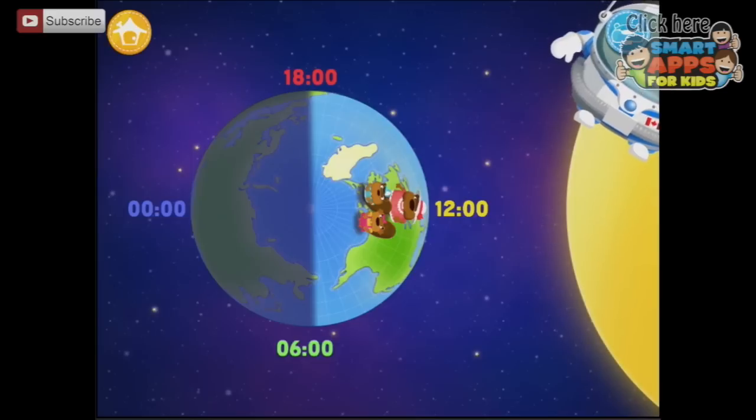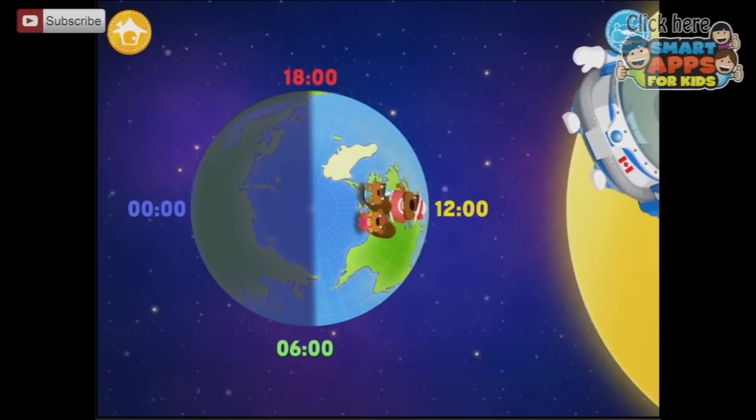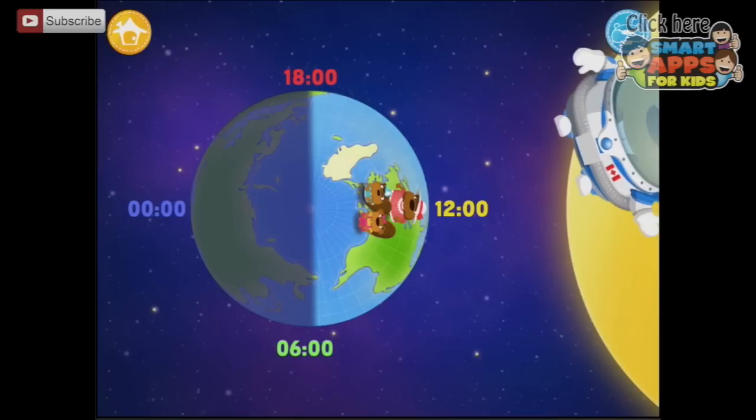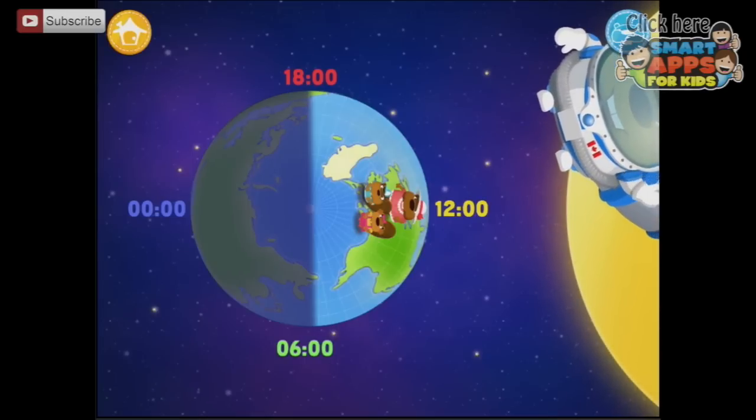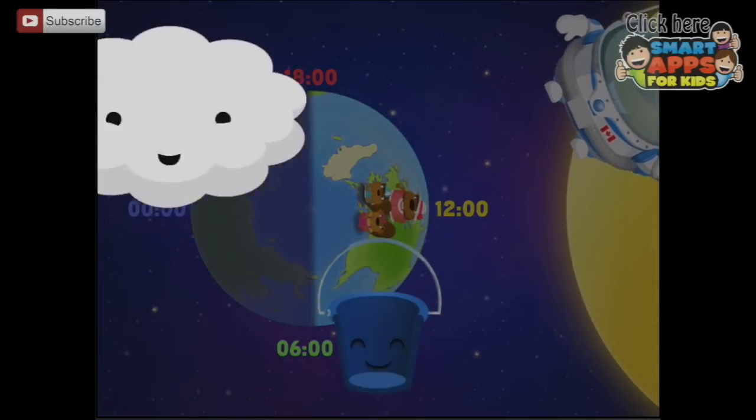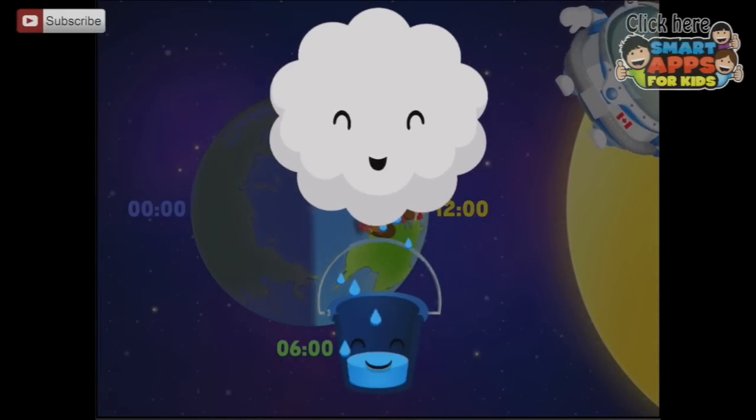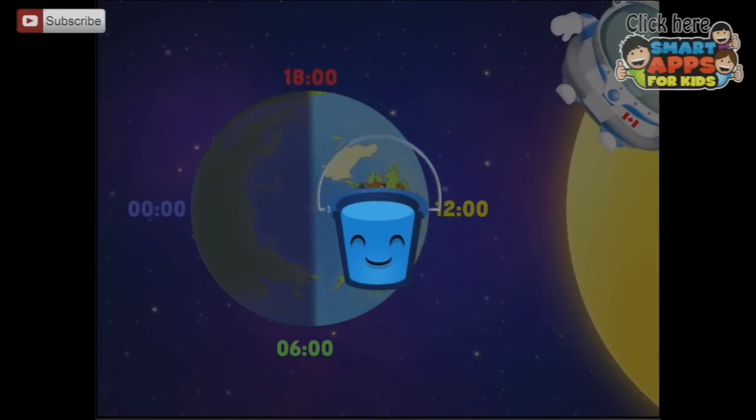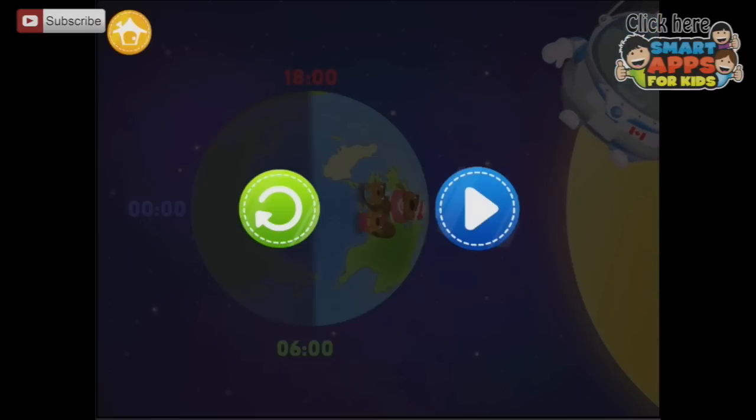Now you know that the sun doesn't really set anywhere. It's just that the forest where I live no longer receives the rays of the sun because the Earth is spinning. Now let's see how to divide the hours between day and night. Okay. First up though, we've got to get our prize. There's our water. Well done.